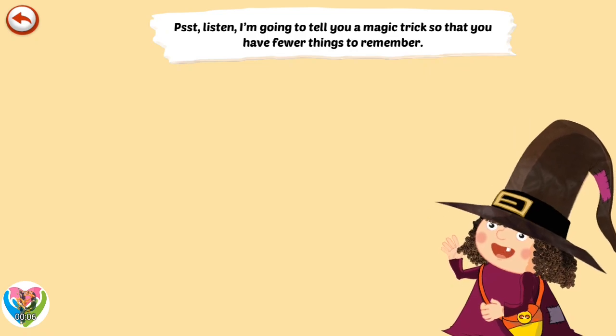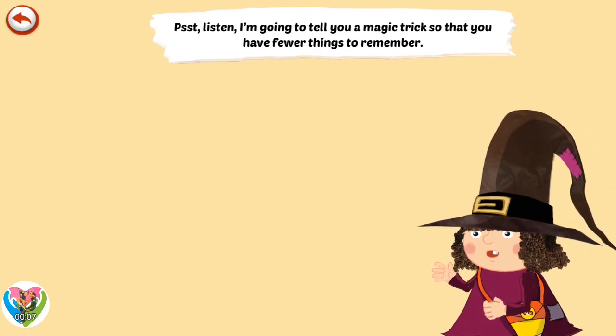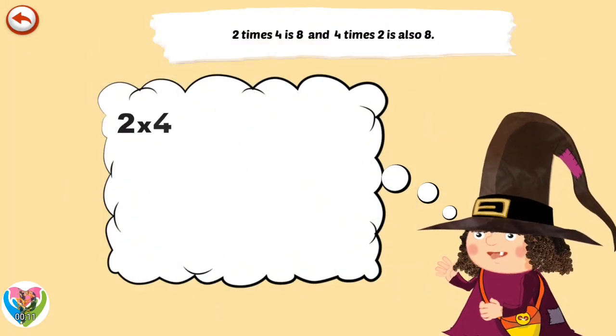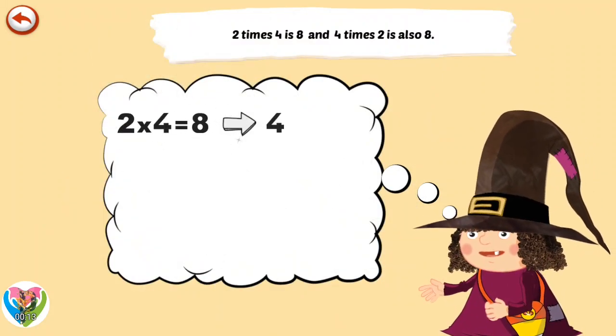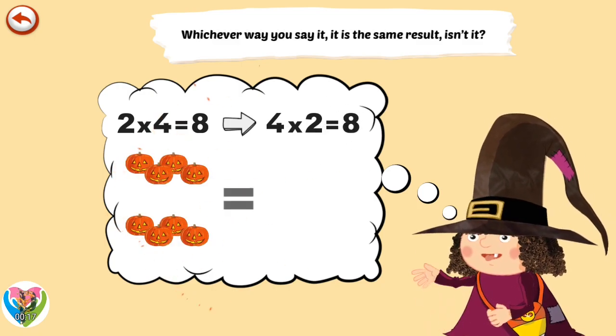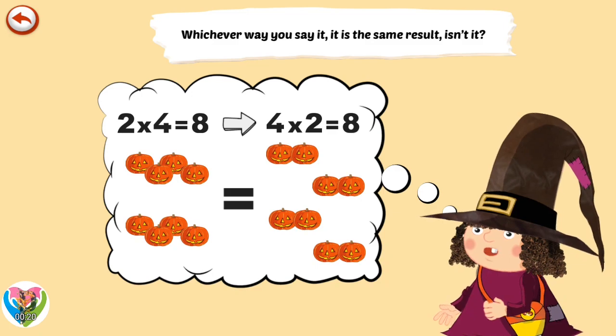Psst, listen, I'm going to tell you a magic trick so that you have fewer things to remember. Two times four is eight, and four times two is also eight. Whichever way you say it, it is the same result, isn't it?